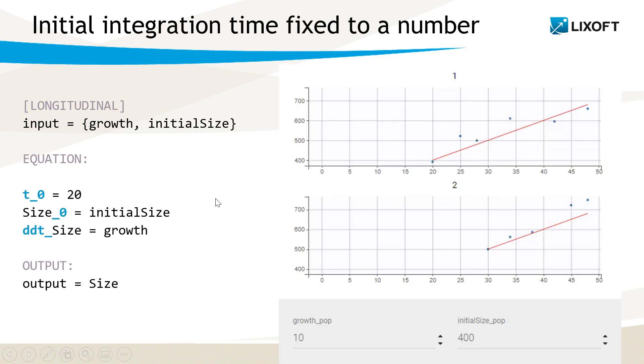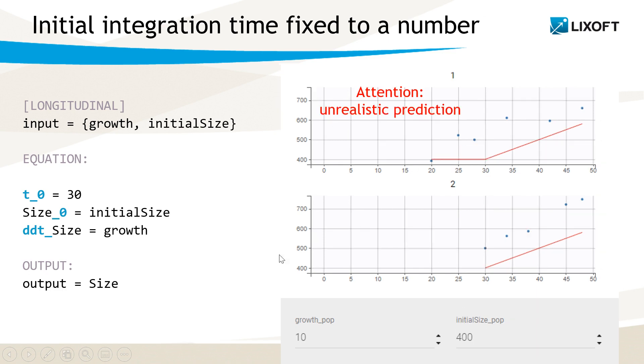For example, here I have the predictions from the same model as previously, with an initial size of 400 at time 20. The prediction looks good, but let's see what happens if the initial size of 400 is at time 30. In this case,